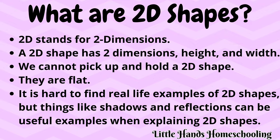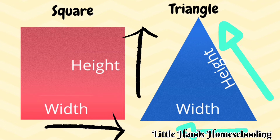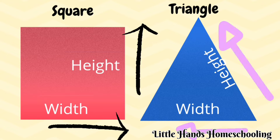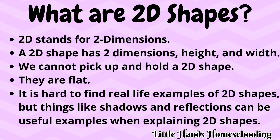So what are 2D shapes? 2D stands for Two Dimensions. A 2D shape has two dimensions, that is Height and Width. We cannot pick up and hold a 2D shape. They are flat or plain, that's why they are also called as flat or plain shapes.